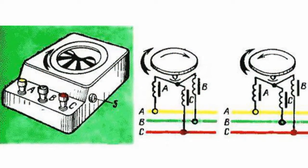The phase indicator clamps indicate a certain sequence of phases. If the disk rotates in the direction of the arrow indicated on the clamp, the phase sequence corresponds to the picture.